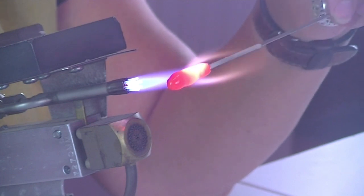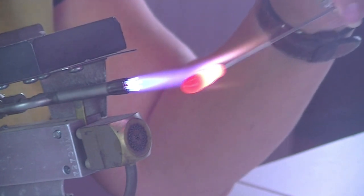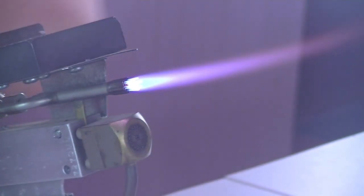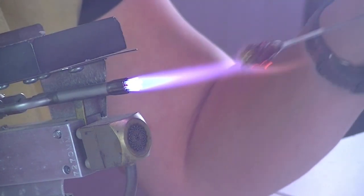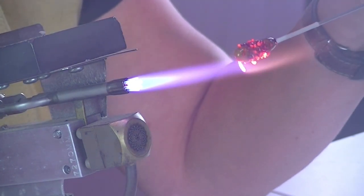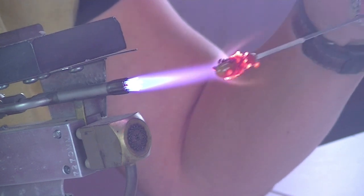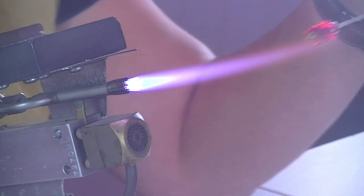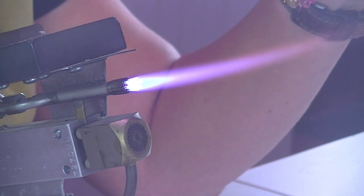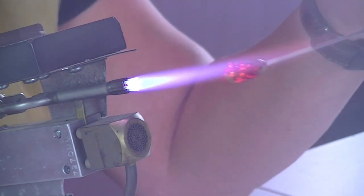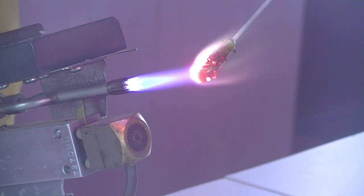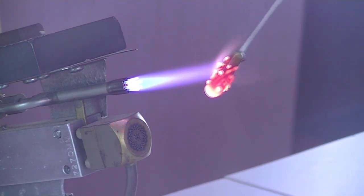So we're just heating this barrel up and then I'm going to roll it in this frit. And you're going to heat the frit up, so melt it into the base bead.